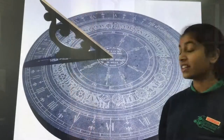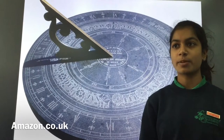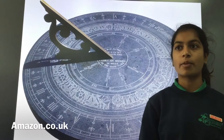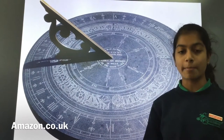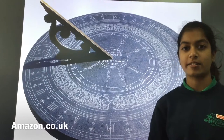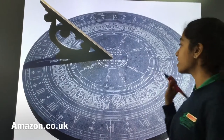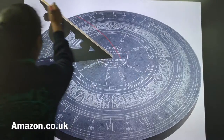This is a sundial. A sundial is an instrument showing the time by the shadow of a pointer cast by the sun onto a plate marked with the hours of the day. As you can see, this is a plate and this is the pointer cast.